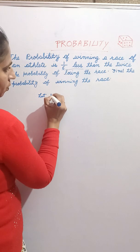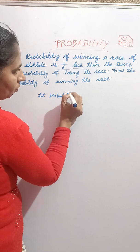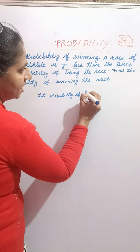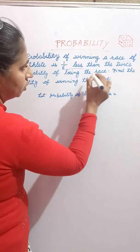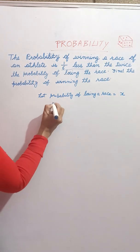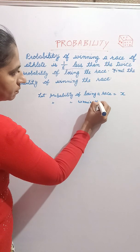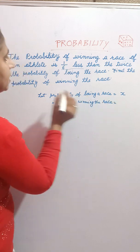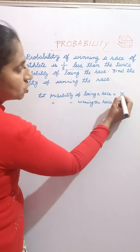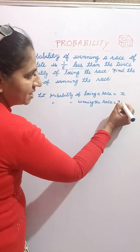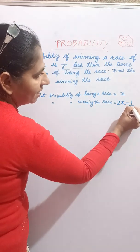Let probability of losing a race equal x. Then the probability of winning the race is 1 by 6 less than twice the probability of losing the race, which gives us 2x minus 1 by 6.